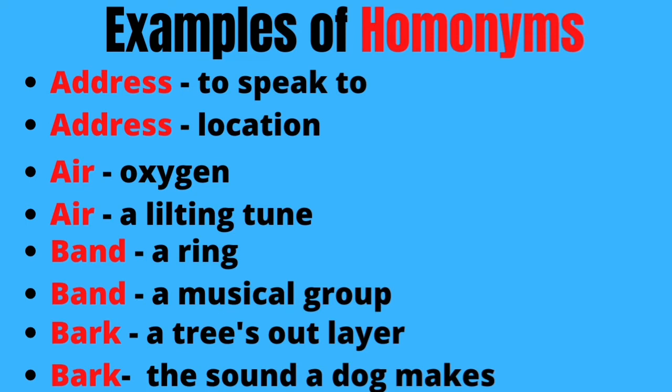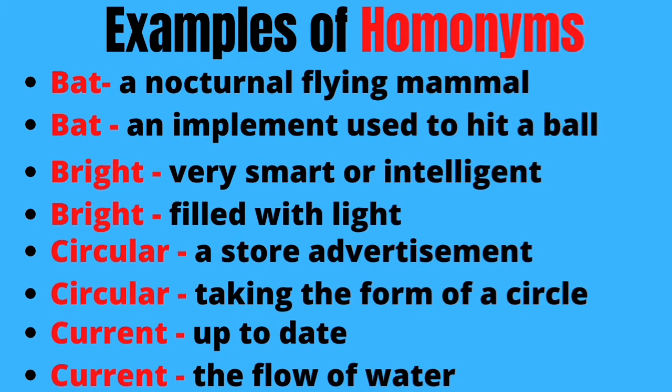Another example is 'air' — air means oxygen, and it also means a little tuning. When your tire needs air, you go to the garage to get your tire some air. Also, the word 'band': a band can mean a musical group, and also your wedding ring is your band. Another word, 'bark': the outer part of a tree is called bark, and the sound that a dog makes is also bark.